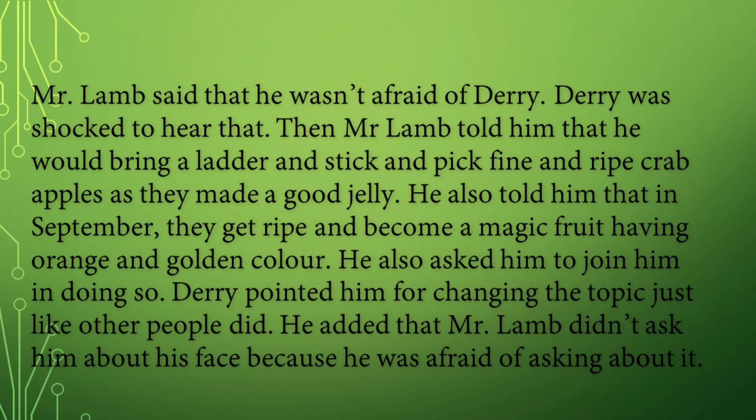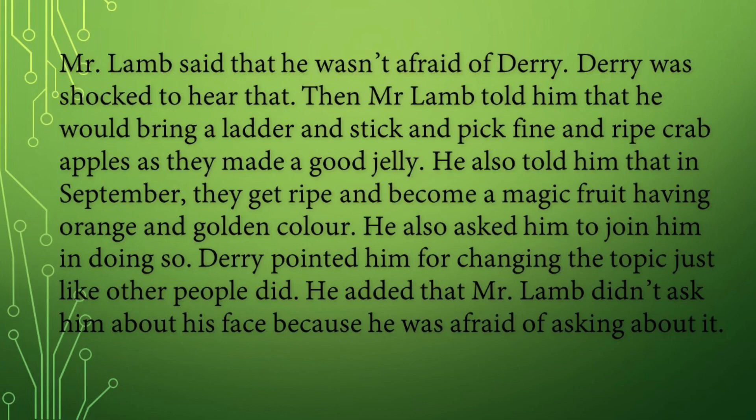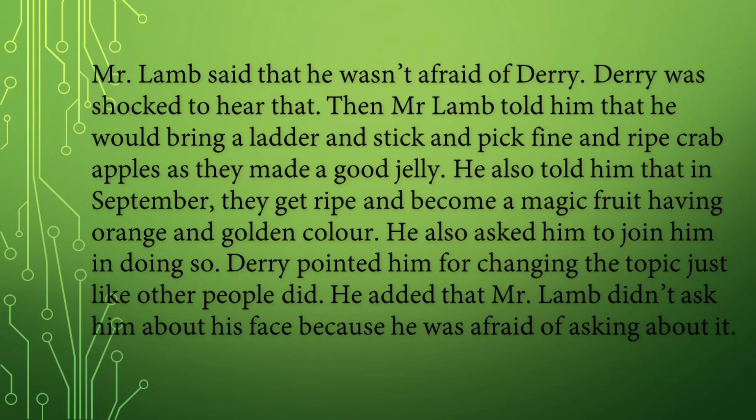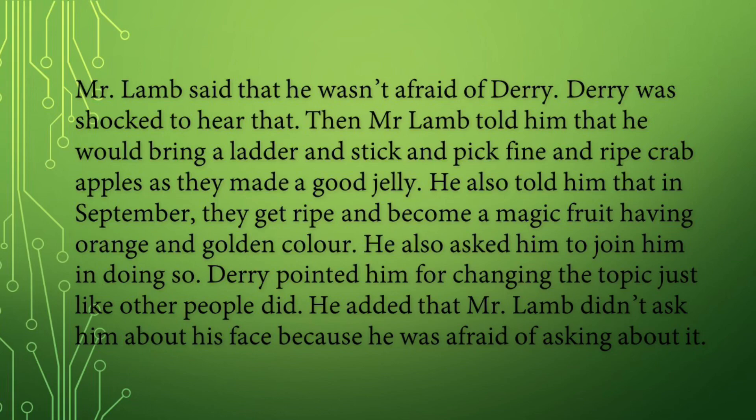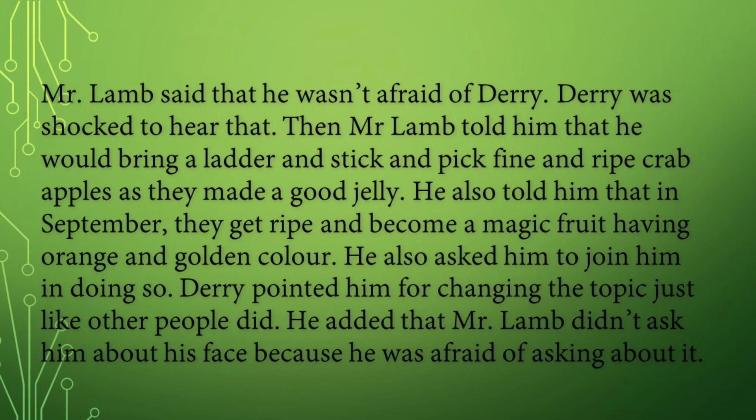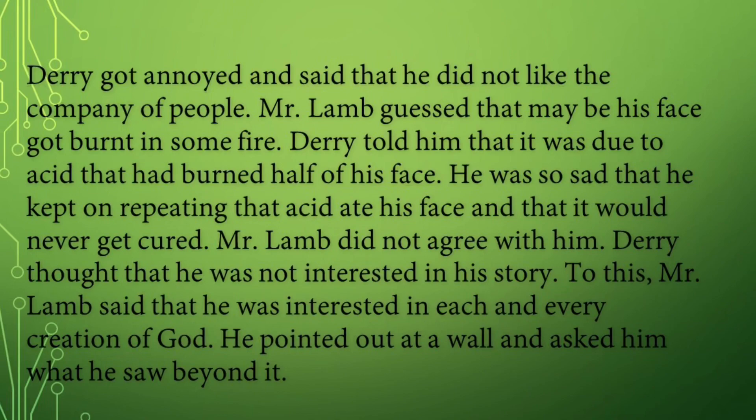Mr. Lamb said that he wasn't afraid of Derry. Derry was shocked to hear that. Then Mr. Lamb told him that he would bring a ladder and stick to pick fine and ripe crab apples, as they made a good jelly. He also told him that in September they get ripe and become a magic fruit having orange and golden color, and asked him to join in. Derry pointed out that he was changing the topic just like other people did, and added that Mr. Lamb hadn't asked about his face because he was afraid of asking.